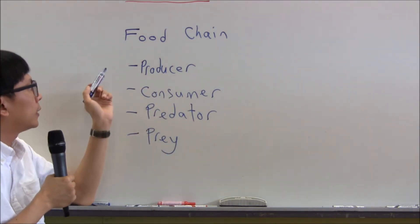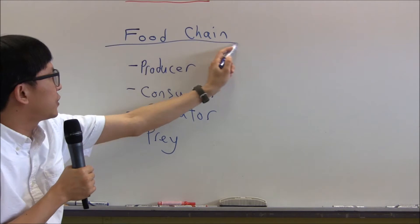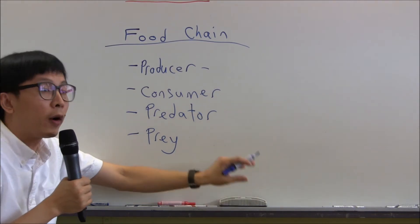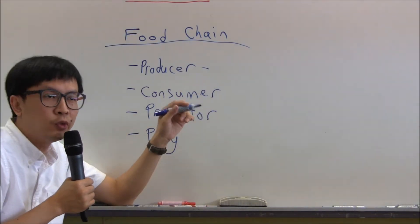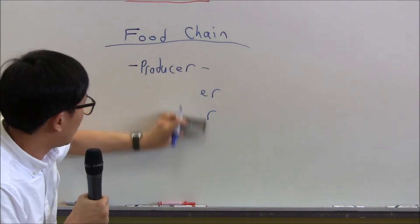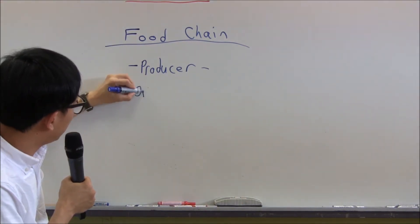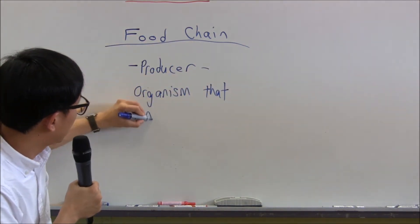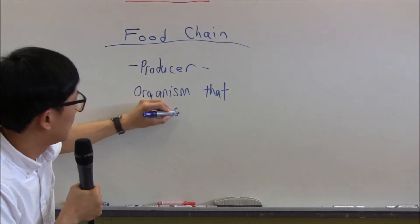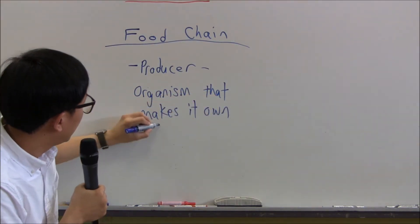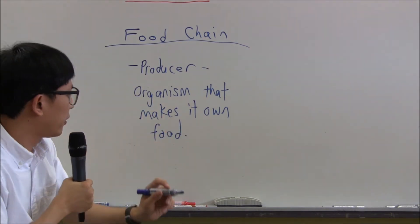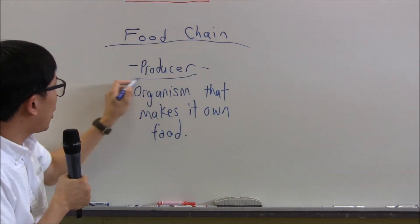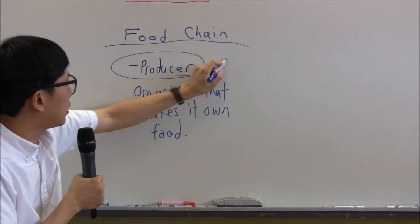Let's first look at a producer. A producer is any organism that makes its own food. Think about it — there's basically only one type of organism that makes its own food, and that is plants. Plants make their own food, so when we talk about producers, we're basically talking about plants.